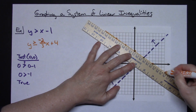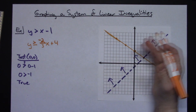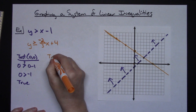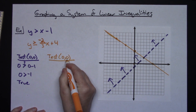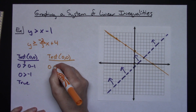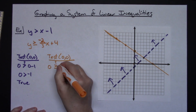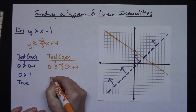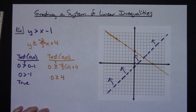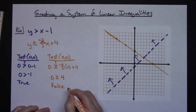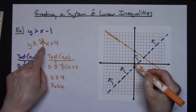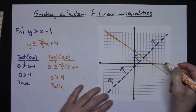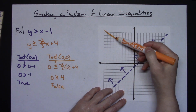I've got to decide which side of that orange line gets shaded. Again I'll test (0, 0) since it's an easy point. Plugging in: zero greater than or equal to negative two-thirds times zero plus four gives zero greater than or equal to four — that is a false statement. So the point (0, 0) did not make this inequality true, meaning none of the points on this side of the orange line are solutions.